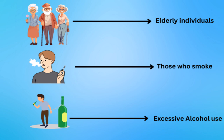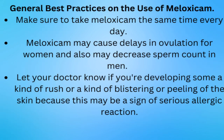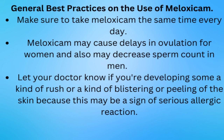If you fall into one of those categories, you may need to make some adjustments. For general best practices: make sure to take meloxicam at the same time every day. Meloxicam may cause delays in ovulation for women and may decrease sperm count in men, so if you plan on having children, discuss this with your doctor before starting. Also let your doctor know if you develop any rash, blistering, or peeling of the skin, as this may be a sign of a serious allergic reaction.